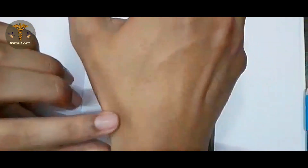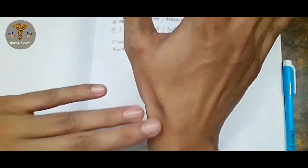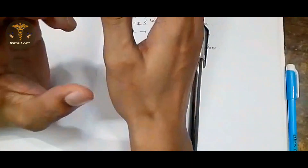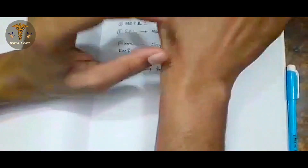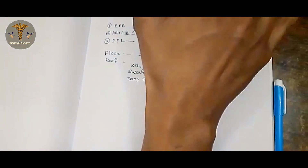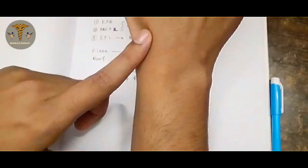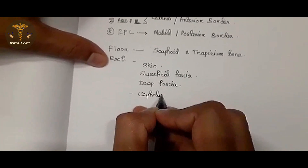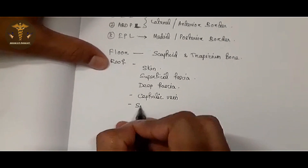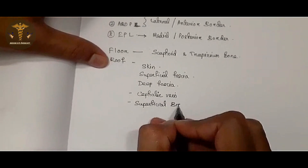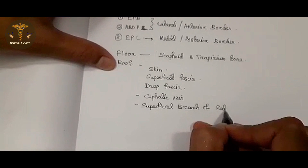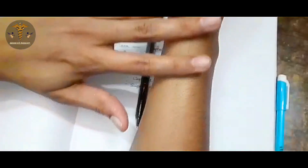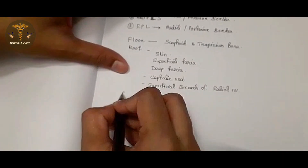The roof is also formed by the cephalic vein, which extends upward and joins further up, and by the superficial branch of the radial nerve. This is the lateral aspect and this is the medial aspect — here is the fascia of the radial nerve, that is the superficial branch of the radial nerve.